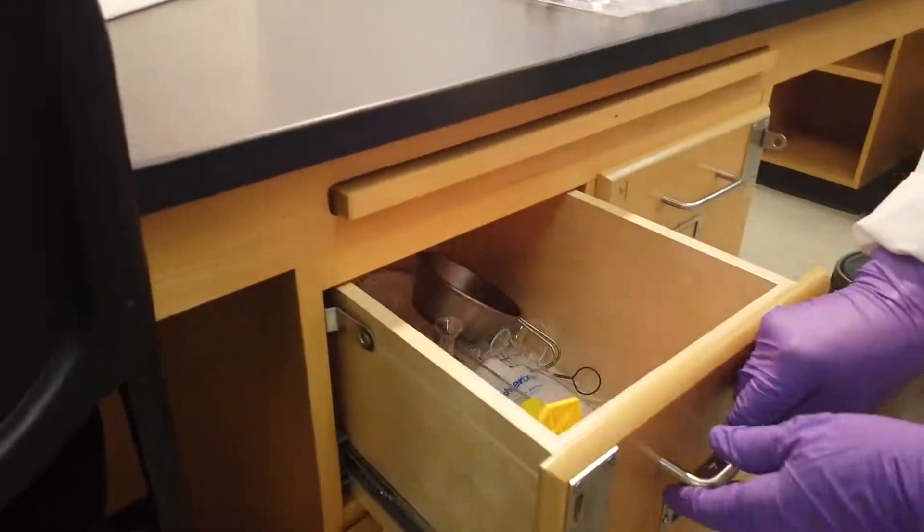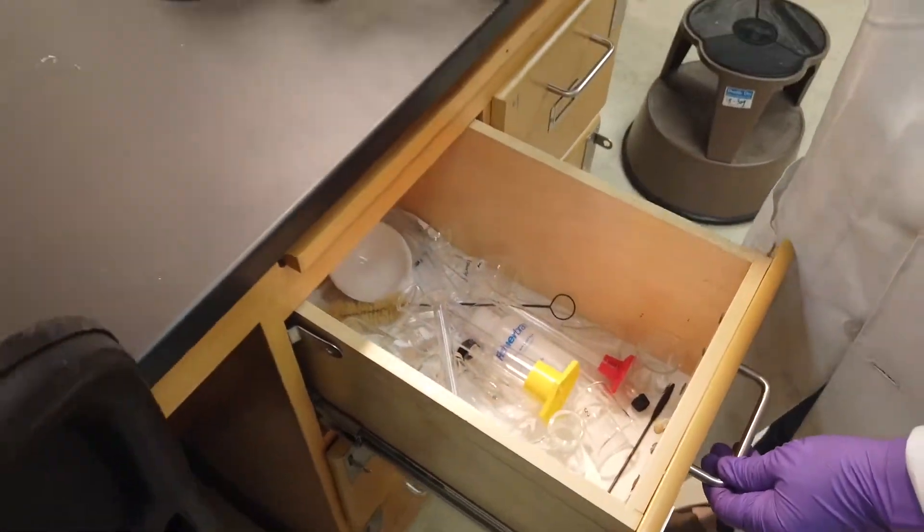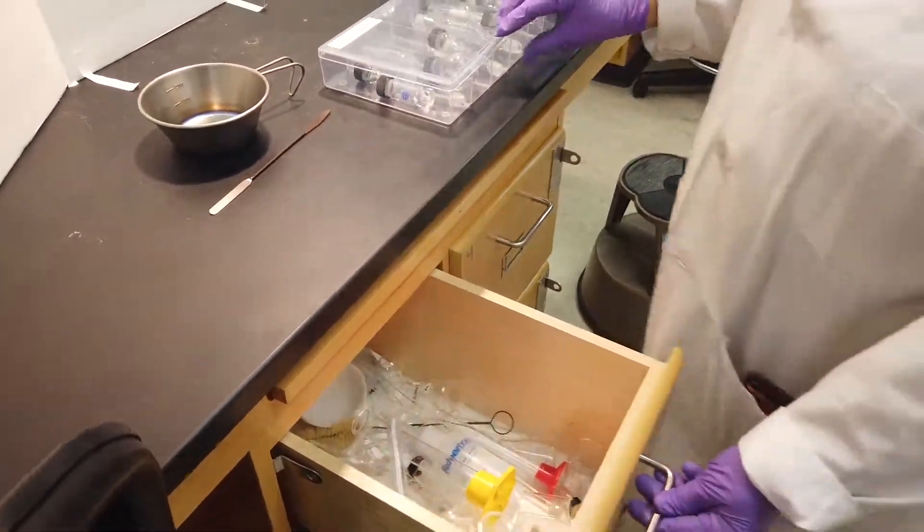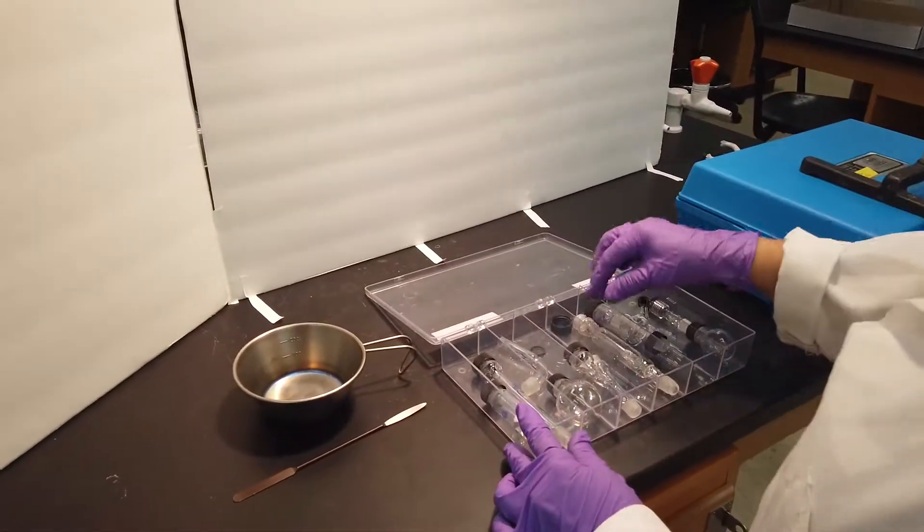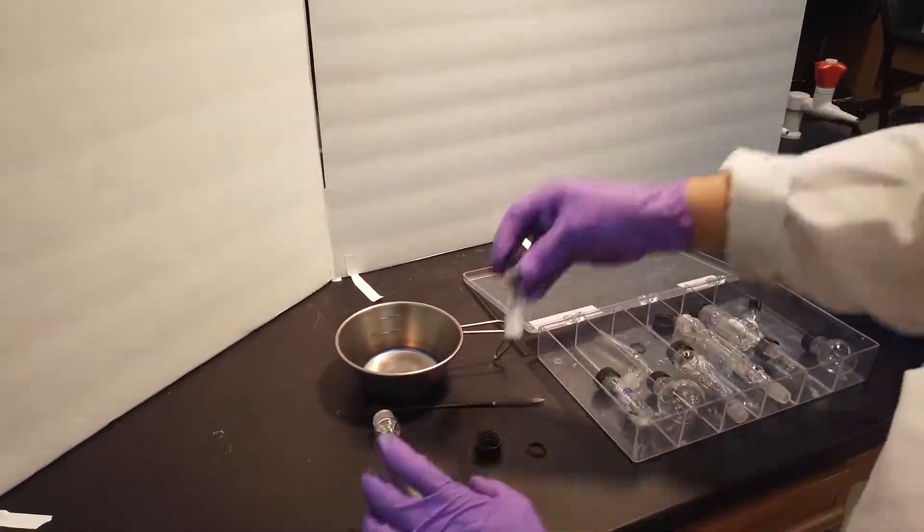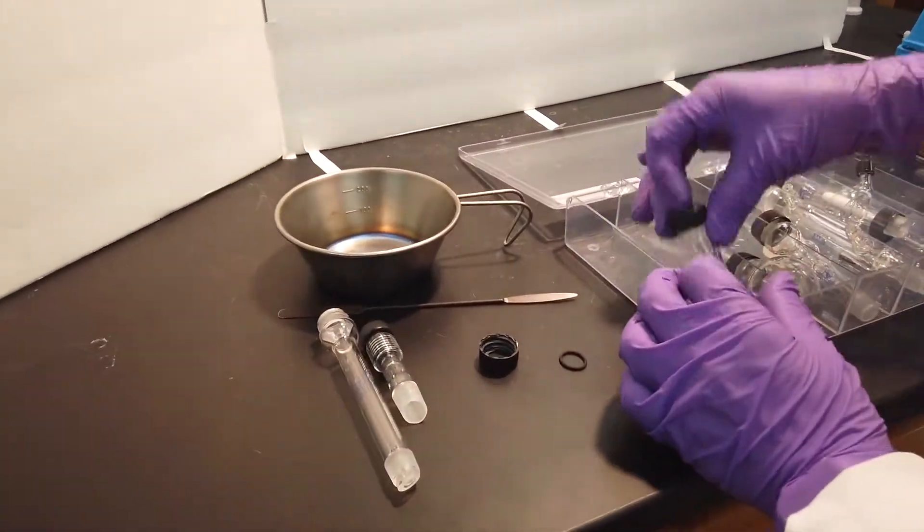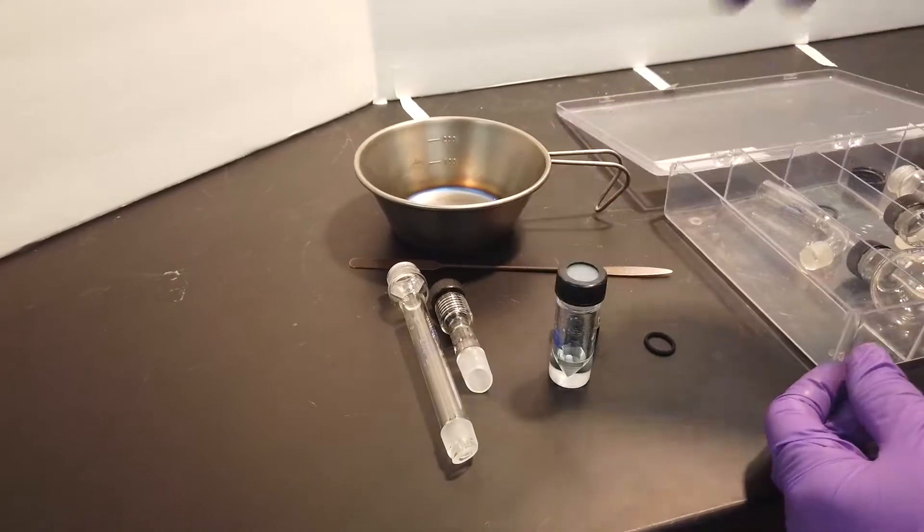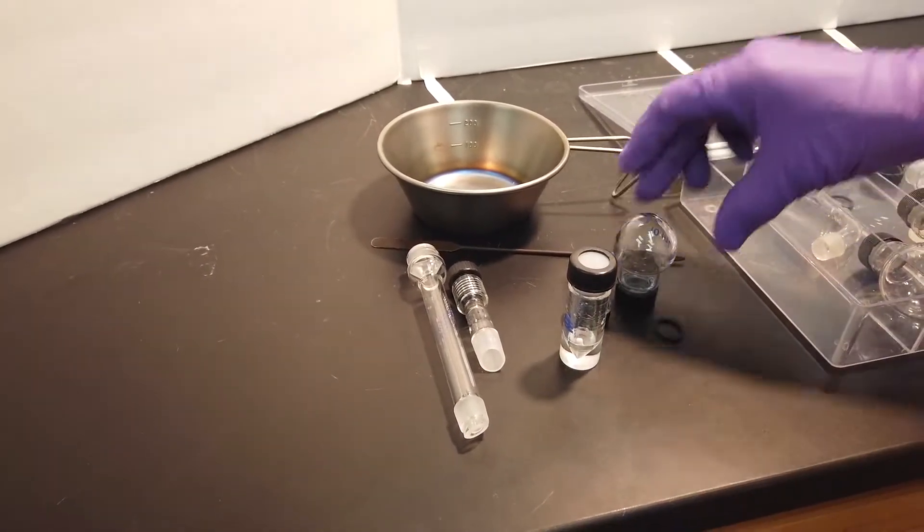Return to your workstation and from your drawer get your metal dish and spatula. From your micro kit you will need a reflux condenser, thermometer adapter, your micro stir bar, which in this case is in a conical vial, and a round bottom flask.